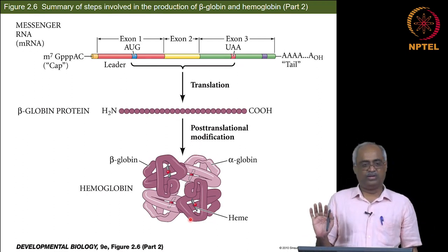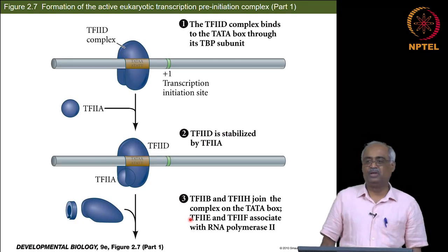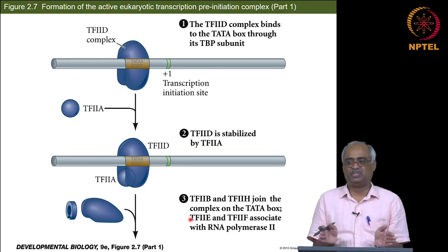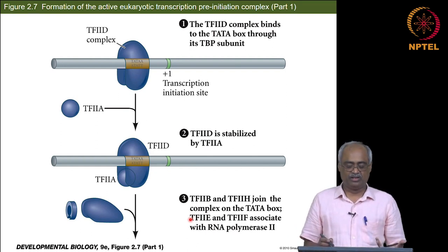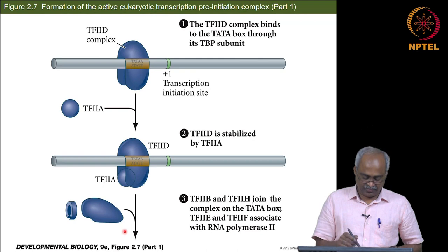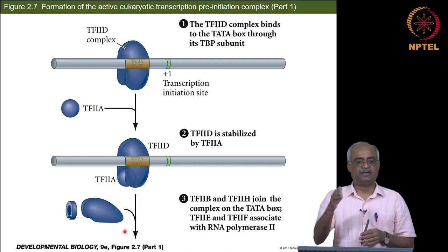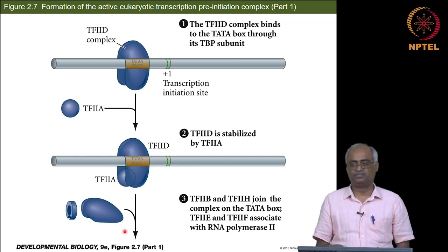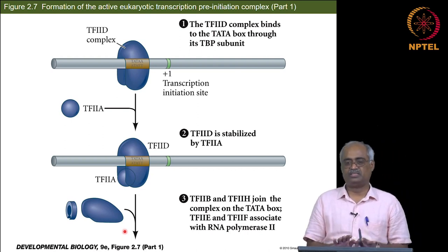Now we know what a gene is and what is its final functional form. We are refreshing these steps so we know where regulation can happen, not yet getting into differential gene expression. The first thing is transcription initiation itself. This cartoon shows that a set of proteins have to bind in a certain sequence to enable the RNA polymerase to start transcription - the initial assembly and recruiting RNA polymerase to the promoter.